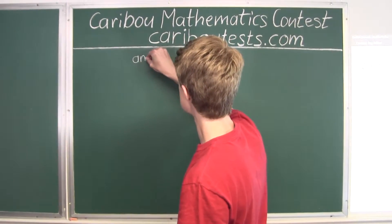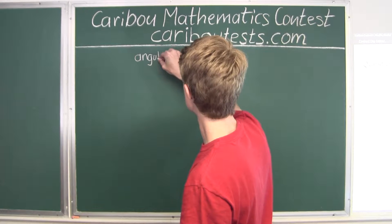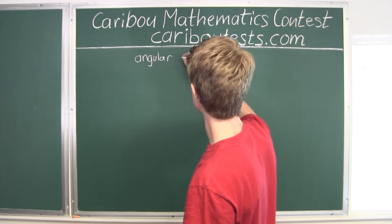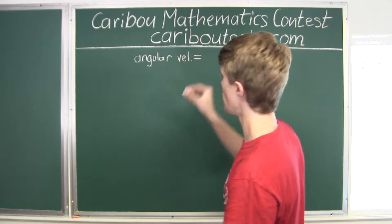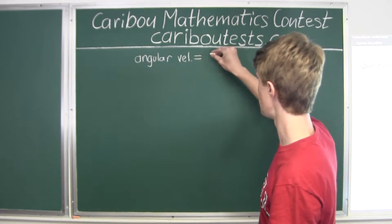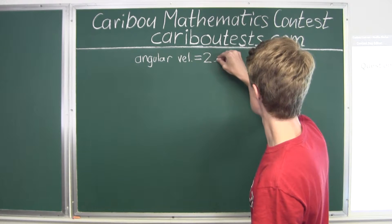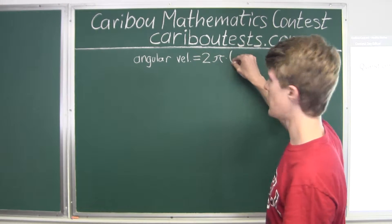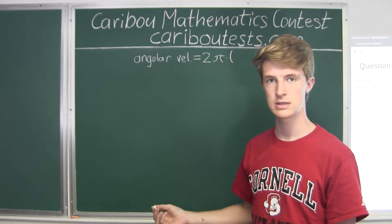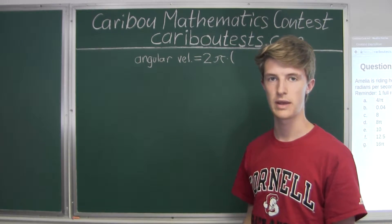The angular velocity is equal to, well first we'll start out with writing the 2π, and now we would multiply this by the number of rotations that the bicycle wheel makes per second.